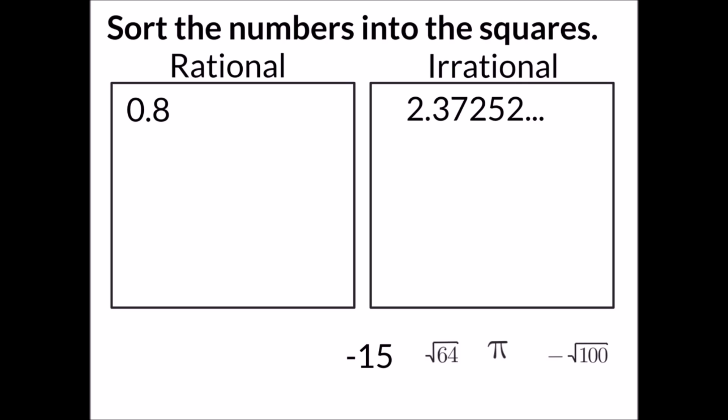Negative 15 is an integer, so it's a rational number. If we look at the square root of 64, we can actually simplify that number to say the square root of 64 equals 8. Therefore, it will be a rational number.